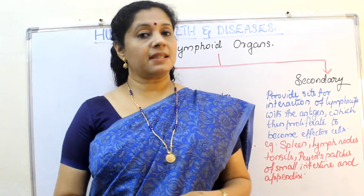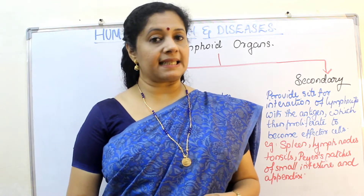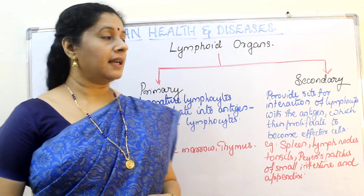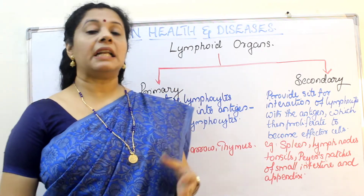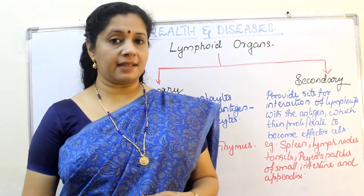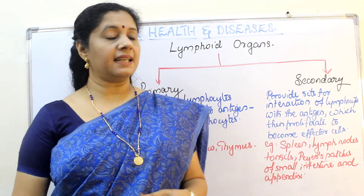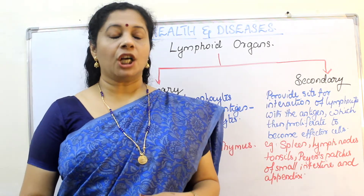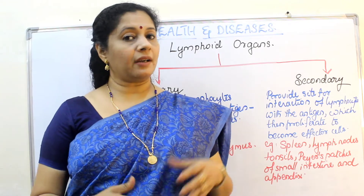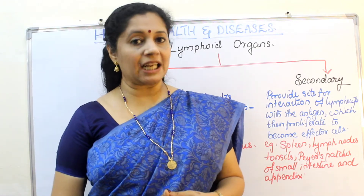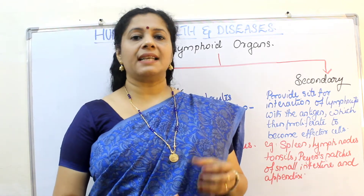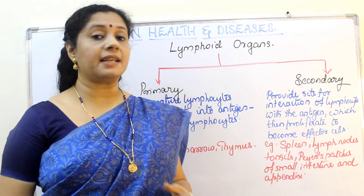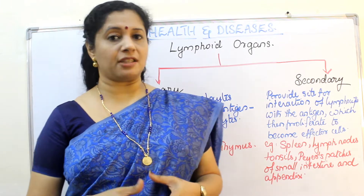Our immune system basically consists of two types of organs. The first is called primary lymphoid organs and the second is secondary lymphoid organs. Before I go into the details of this, I would like to introduce you to the basics of antigen and antibody.